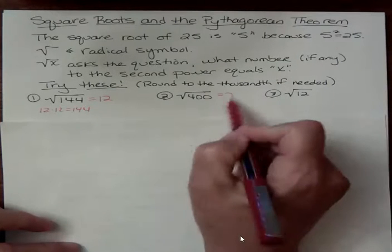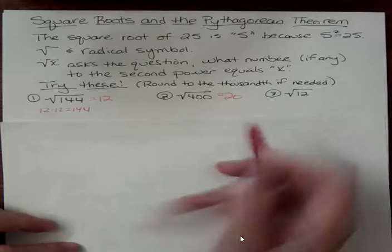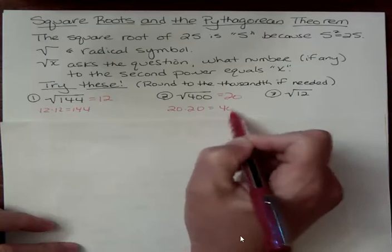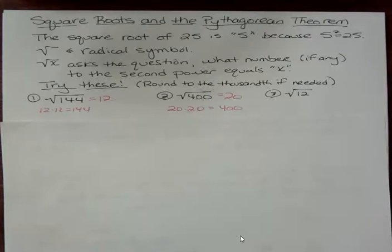Okay, second function square root 400 equals 20. And so the reason that's true is because 20 times 20 equals 400. That was the question. What number times itself would equal the radicand, or in this case, 400?